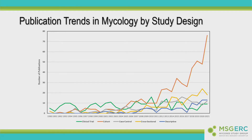I did a quick search in PubMed last week for papers published since 1990 by study design. What this graph shows is that over time, clinical trials in mycology have remained fairly constant — the number of publications per year has remained fairly constant. But one of the dramatic things you see there — that orange line — is the dramatic increase in observational studies, particularly cohort studies. The increase in cross-sectional studies is somewhat drowned out by that increase in cohort studies.